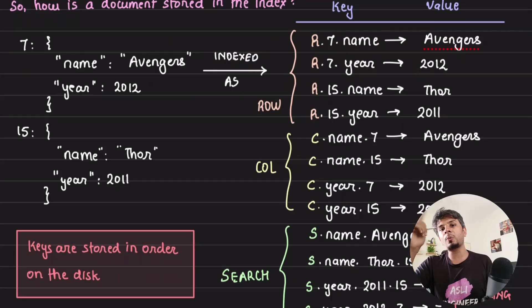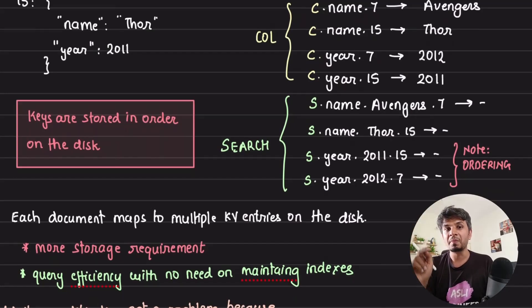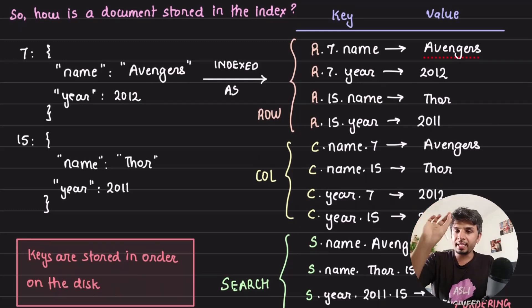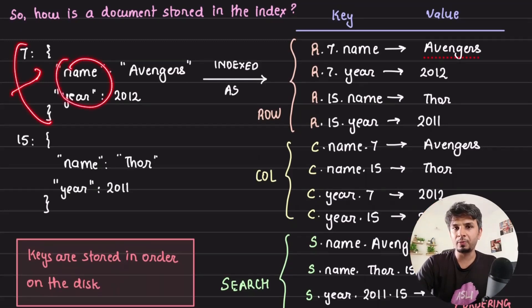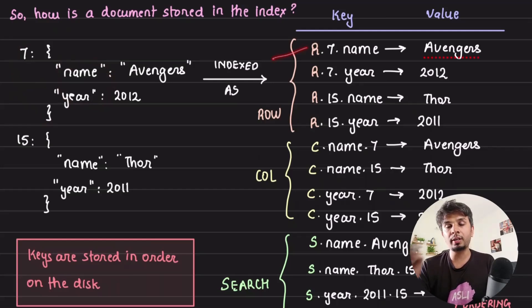Another set of values it stores is optimized for column where just the order changes, so C.name.7 arrow Avengers, C.year.7 equal to 2012. This is what it stores for that same document in column-oriented format. And for search it stores S.name.Avengers.7 equal to some value, basically null, and then S.year.2012.7 equal to something. Now you'd say, but Arpit, what are these values? What are these keys? Is there a significance to it? Now observe the significance. Each document that we saw with two attributes was stored with total six entries in the table.